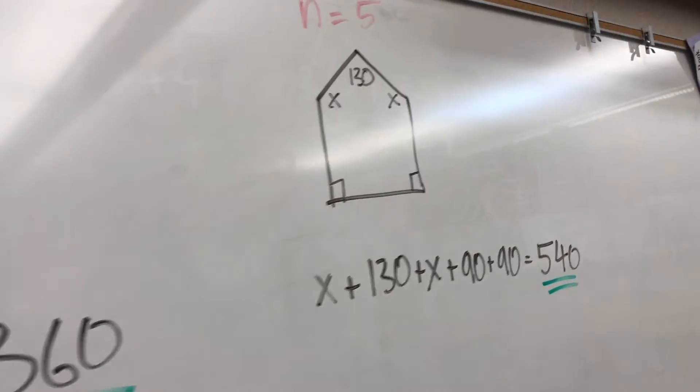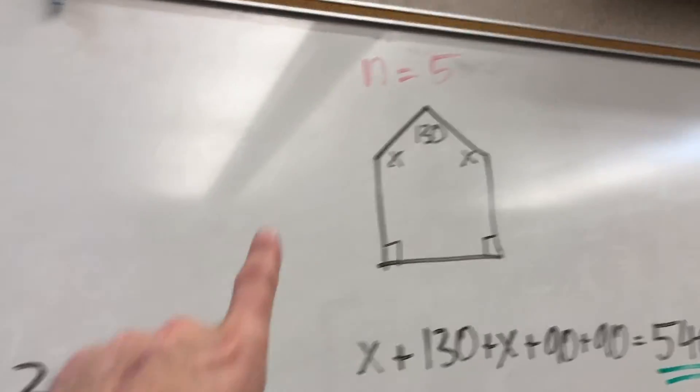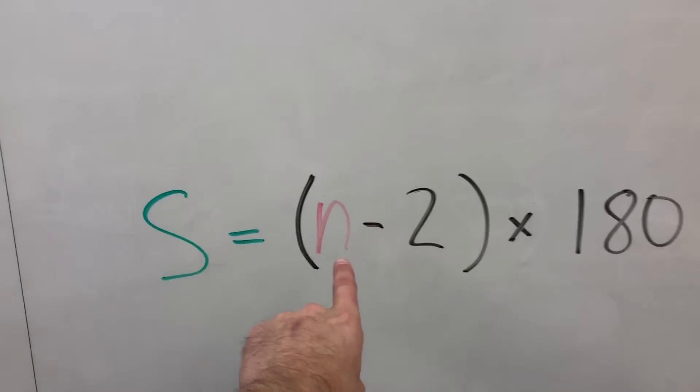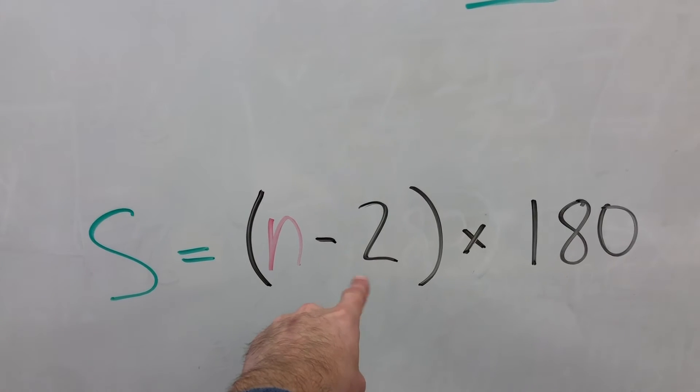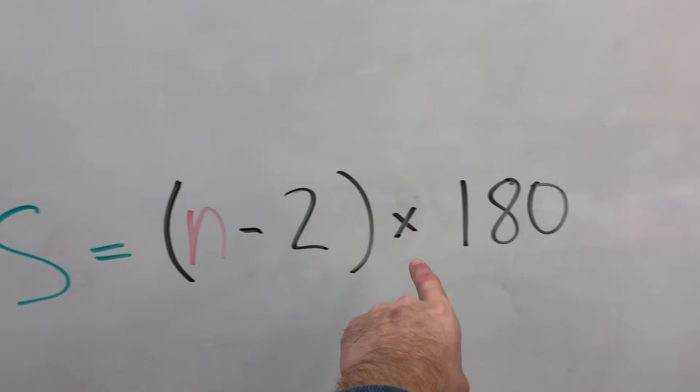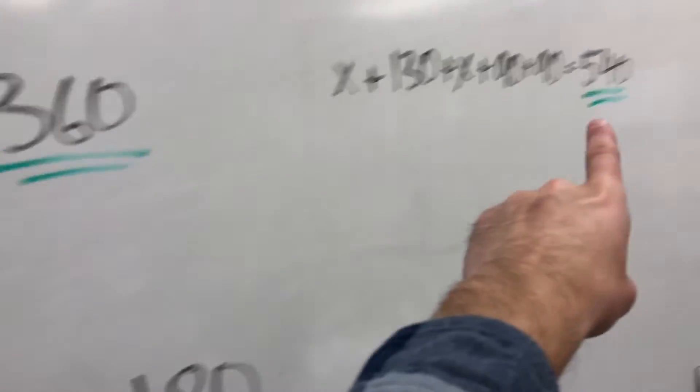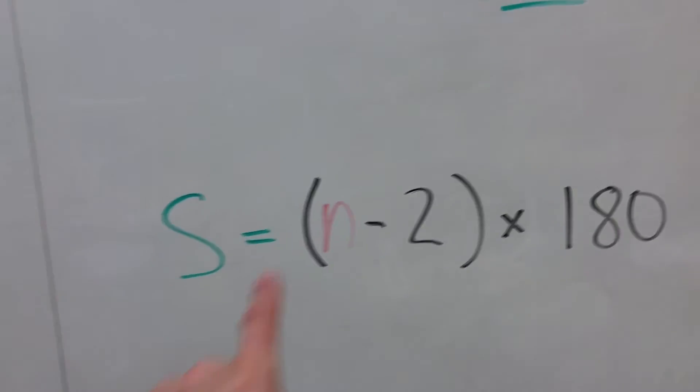So let's take this five-sided shape for example. Let's pretend that it's a five-sided shape. So n must be five. What's five minus two? Three. Yes, it is three. What's three times 180? 540. Yes, it is. So here is your angle sum formula.